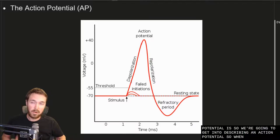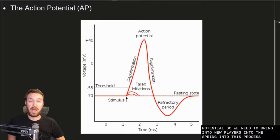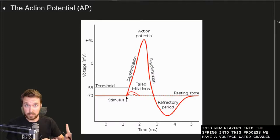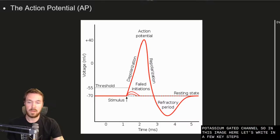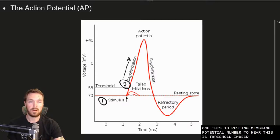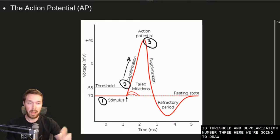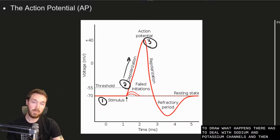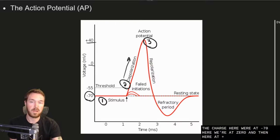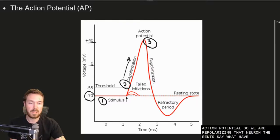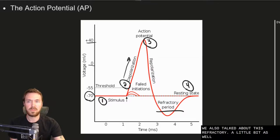Now we'll describe an action potential. We need to bring in two new players: a sodium voltage-gated channel and a potassium voltage-gated channel. Looking at this image, we can identify key steps: number one is resting membrane potential; number two is threshold and depolarization; number three involves the sodium and potassium channels and repolarization — getting back to minus 70 to fire the next action potential; and number four is the return to resting state. We'll also talk about the refractory period.